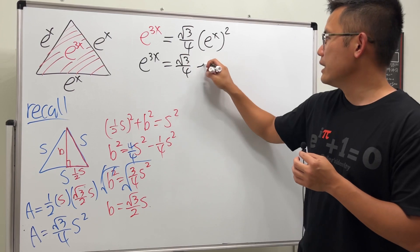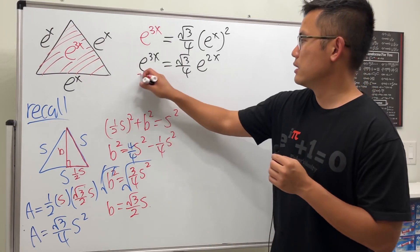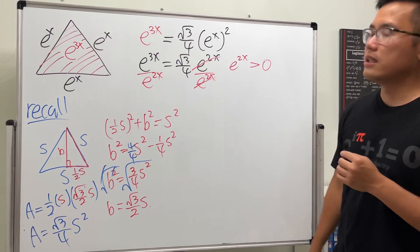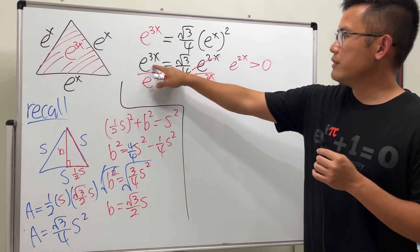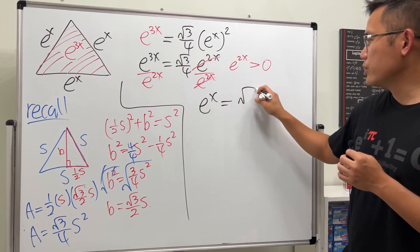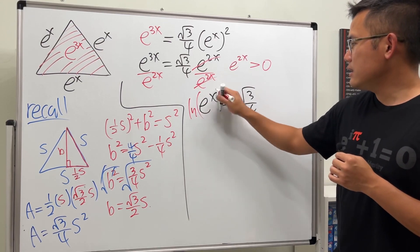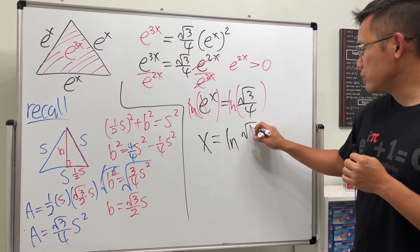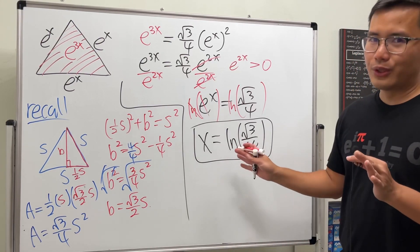Now this isn't bad at all — we can divide both sides by e^(2x), since e^(2x) is always greater than zero, so we're never dividing by zero. Dividing gives e^(3x − 2x) = e^x = √3/4. To solve this exponential equation, take the natural log of both sides: ln(e^x) cancels to x, so x = ln(√3/4).